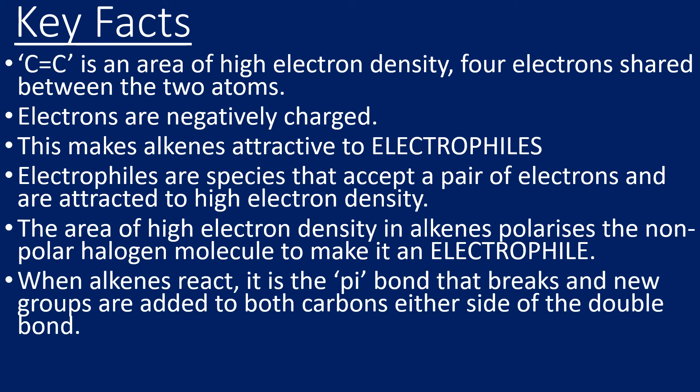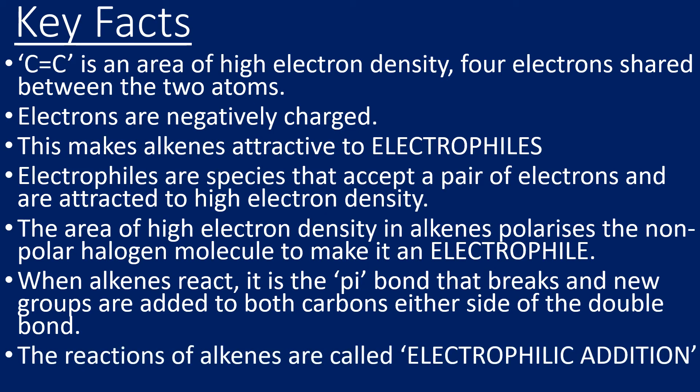So when the alkene reacts, those pi bonds break and those pi electrons will attack the electrophile. And you end up with two new groups added to either carbon, or to both carbons either side of the double bond.